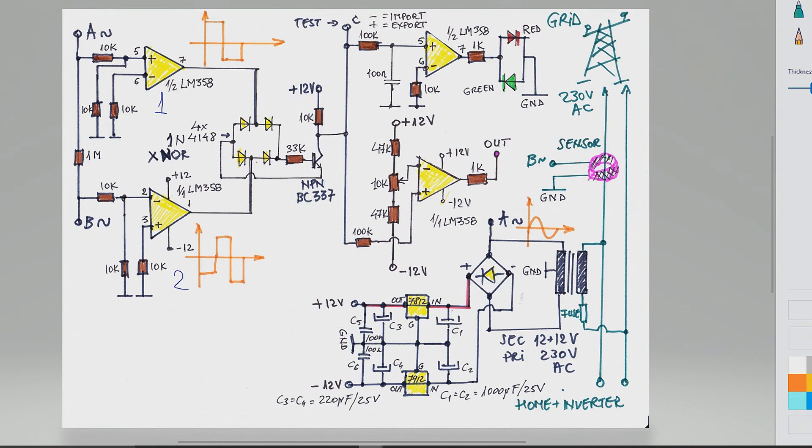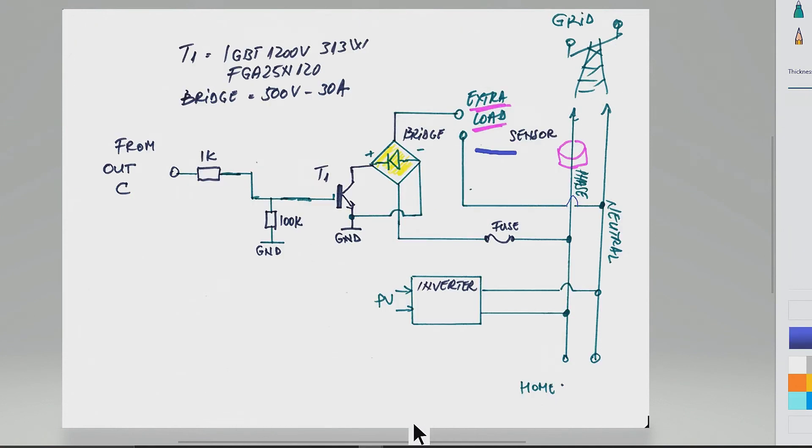Now let's talk about the output. The output is transferred through one kilo resistor to this transistor here - it's an IGBT, at least 1200 volts, this one at 330 watts, FGA25N120. After that we have a bridge, a power bridge, 500 volts, and it's connecting the extra load over here. The most important thing is to understand the schematic.